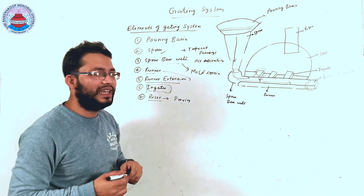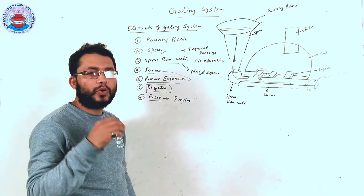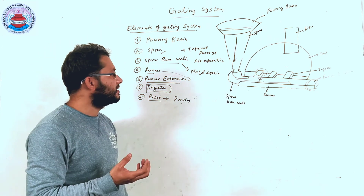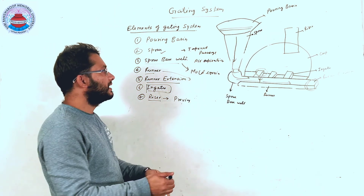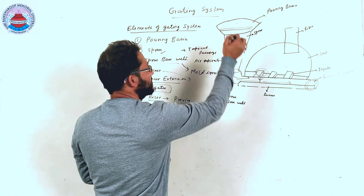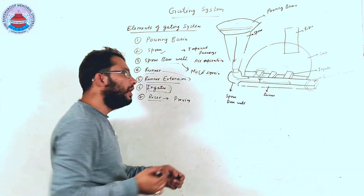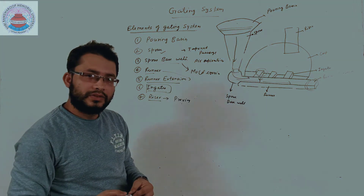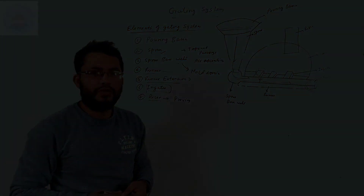So these are the various elements provided in the gating system so that molten material will flow from the pouring basin up to the mold cavity. Thank you students.